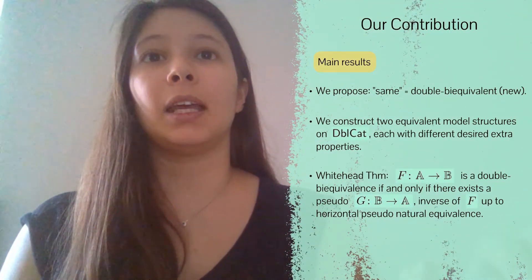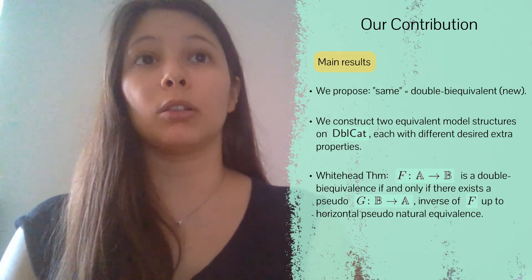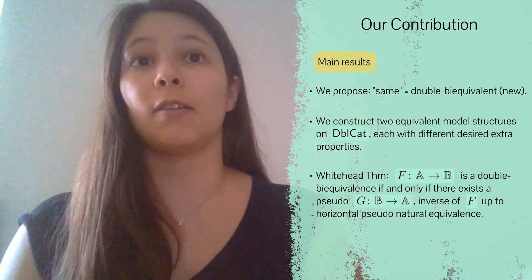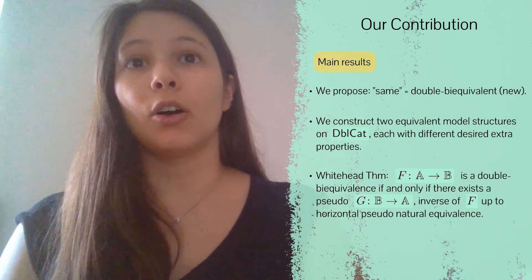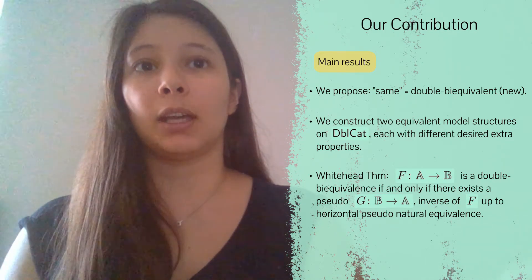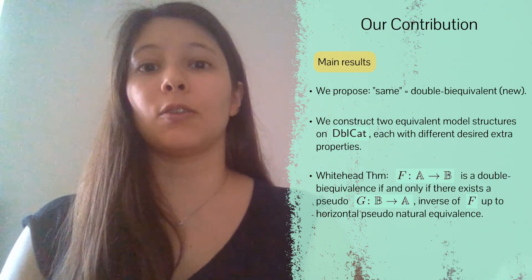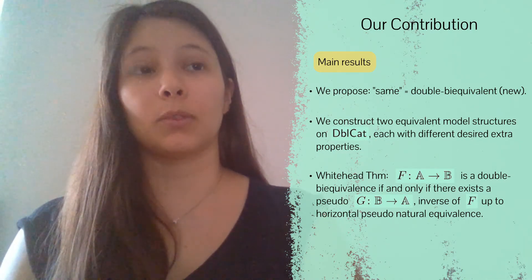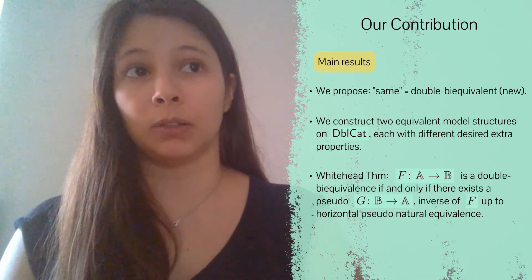It turns out that none of the existing notions of sameness between double categories are able to fulfill this purpose, so we propose a new notion which we call double bi-equivalence. Our main result is to construct two model structures on Double-Cat, both of which achieve our goal of having a fully faithful embedding of the homotopy category of 2-categories into the homotopy category of double categories, and each with different extra desired properties. Moreover, we get a Whitehead theorem characterizing our new class of equivalences: a functor is a double bi-equivalence if and only if there exists a pseudofunctor G going the other way which is an inverse of F up to horizontal pseudonatural equivalence.